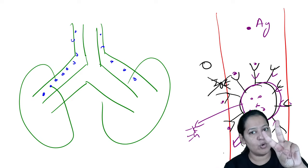Beta-2 agonists are given by the inhalational route using inhalers (pumps), not oral or injection routes. These inhalers are known as metered-dose inhalers (MDI). The drug inside must be in micronized particle form with a size of 1 to 5 micrometers. If less than 1 micrometer, the drug is inhaled and exhaled without deposition. If more than 5 micrometers, it deposits in the mouth only and does not reach the airways. There are three delivery devices: metered-dose inhaler (MDI), nebulizer, and rotacap.